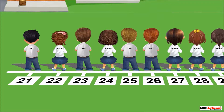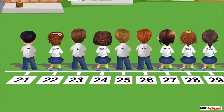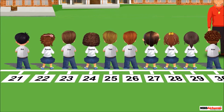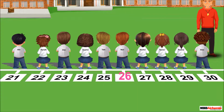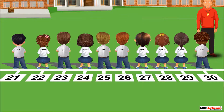All nine children are standing at a certain number. Neil is standing at 26. Alicia is standing after Neil, and Alicia is standing on number 27. This means 27 comes after 26.